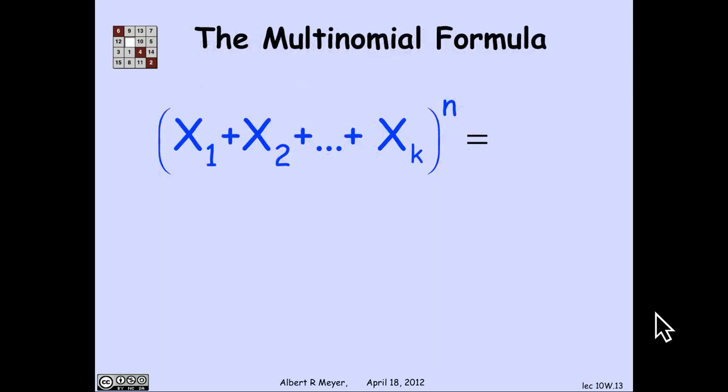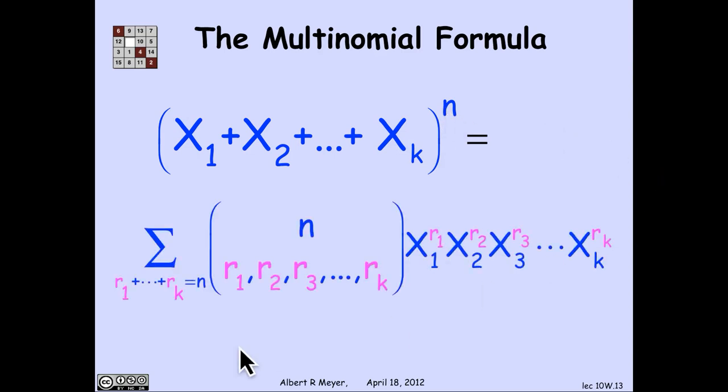Now we're ready to state the general multinomial formula. If I take a sum of k terms, a k-nomial to the nth power, then expressing it in concise notation, it's the sum over r1 through rk summing to n of the multinomial coefficient n, r1 through rk, times this product of x_i's. I'm not putting a highlighted box around it because this is not a formula which is particularly important to memorize, and it's clearly all clogged up with subscripts. But nevertheless, it's good to have sometimes for the record.